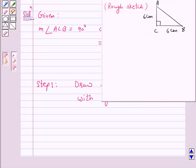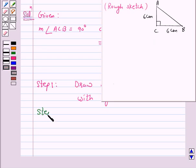Now, this is a rough sketch with given measures where angle ACB is 90 degrees, AC is 6 cm and CB is also equal to 6 cm. Now, we will start the actual construction with the help of this rough sketch. So, our next step is draw a line segment CB of length 6 cm.